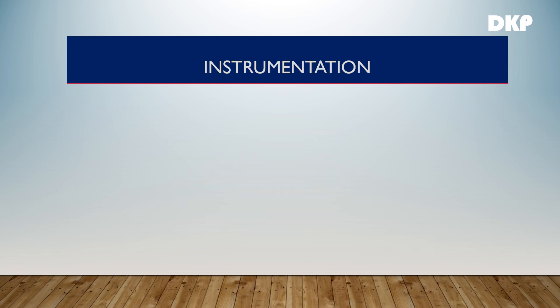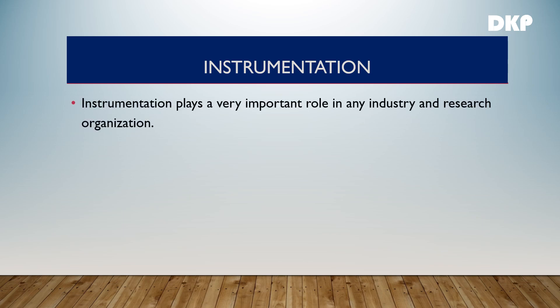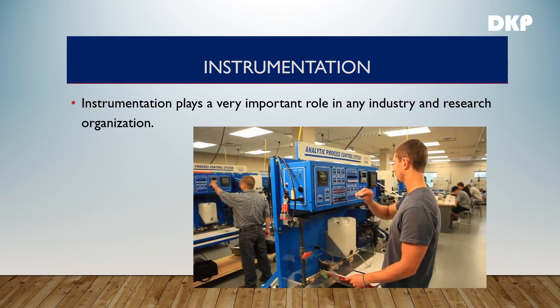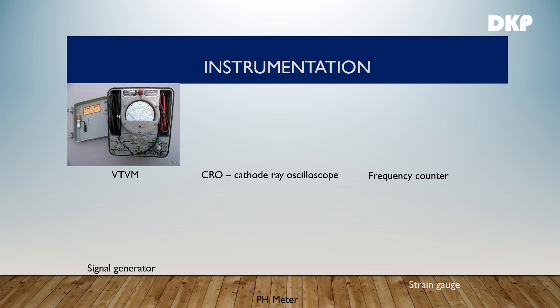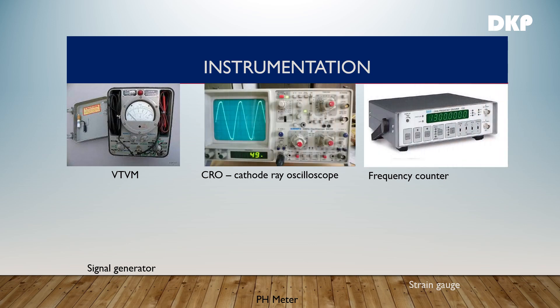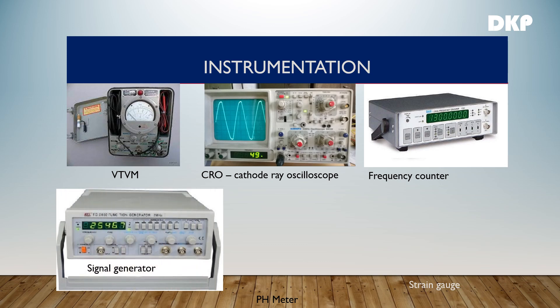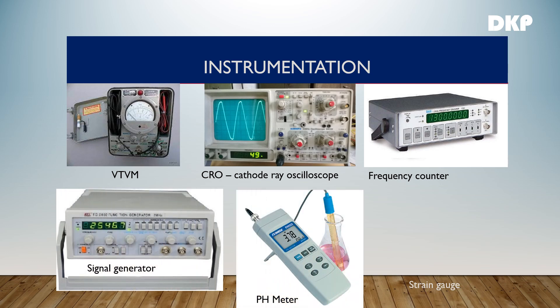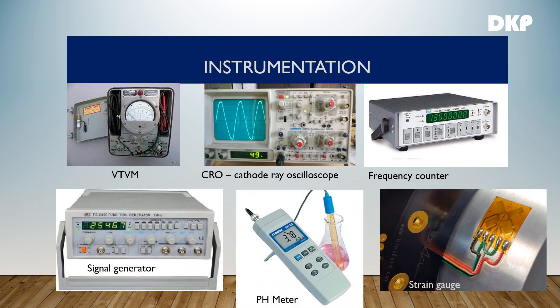Now let us see the application of electronics in instrumentation. Instrumentation plays a very important role in any industry and research organization. VTVM, cathode ray oscilloscope, frequency counter, signal generator, pH meter, strain gauge, etc. are some of the electronic instruments used in research laboratories.